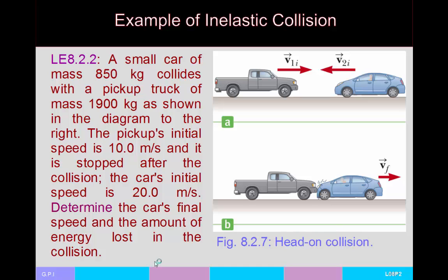Let's look at a different example — an inelastic collision between two vehicles in a head-on collision. We're given the mass of both vehicles, their speeds, and that one vehicle is stopped after the collision. The problem asks for the car's final speed and how much energy was lost.